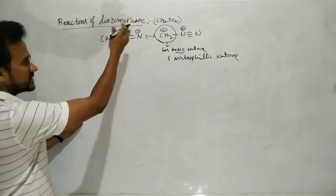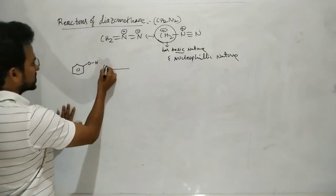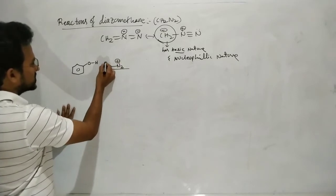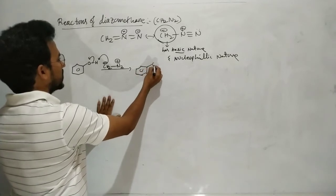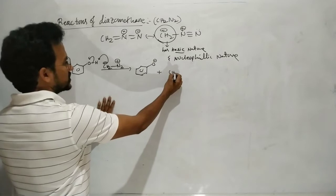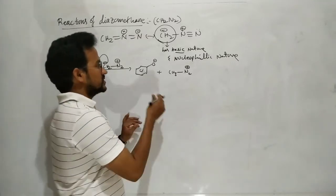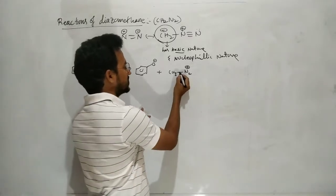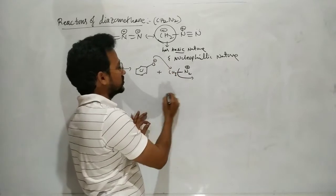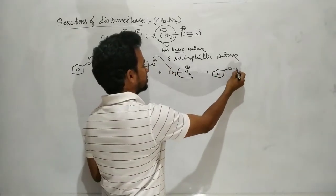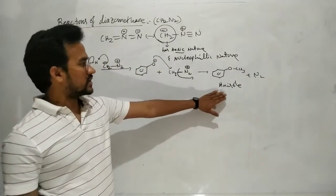As a base: phenol on reaction with diazomethane (CH2⁻N2⁺). The negatively charged carbon accepts the proton from phenol, giving phenoxide ion, and CH2 is converted to CH3N2⁺. N2⁺ is an excellent leaving group because it becomes stable after leaving. So CH3⁺ (electrophile) is attacked by the phenoxide nucleophile, and as a result we get methoxybenzene, also known as anisole, plus N2.